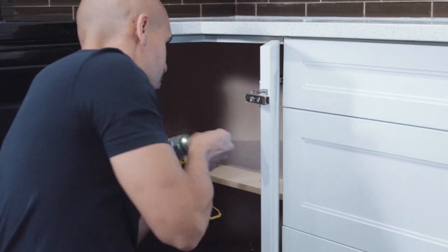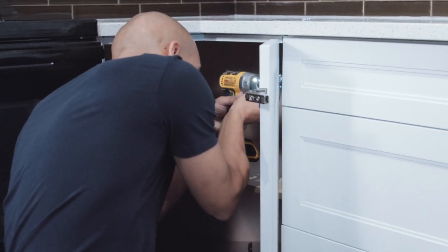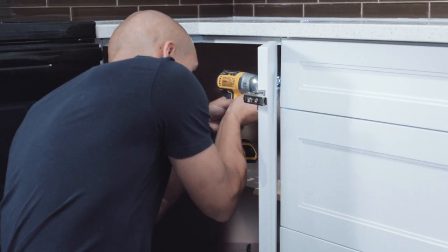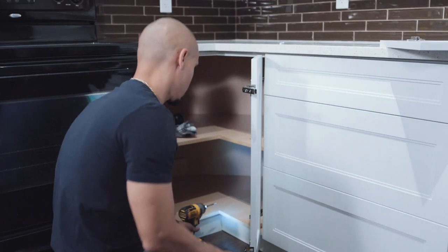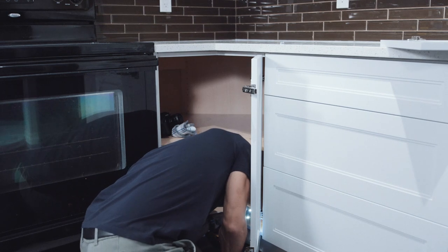Attach the top hinge inside the Lazy Susan corner cabinet using number 6 by 5 eighths inch screws. Now attach the bottom hinge and adjust the hinges in order to square the doors to each other and the cabinet.